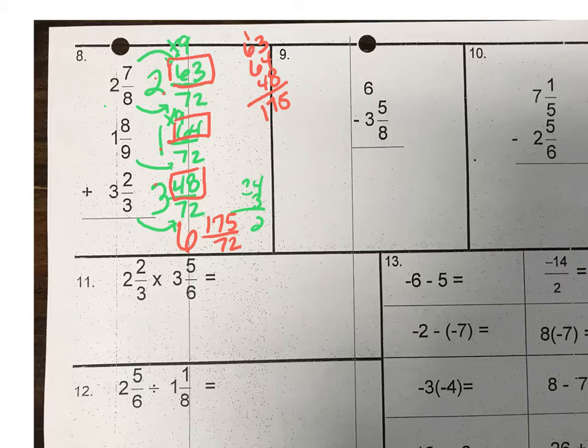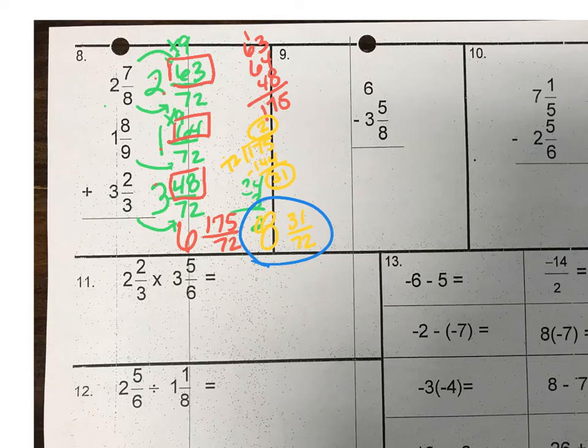Once we do that, we've got to simplify this fraction. It's improper, so we've got to move it to make it proper. So 175, 72 goes into 175, I think, just twice. So we'll make sure, but yep. So that's going to give me two holes to put over to the 6. So it makes it 8, and then 31 seventieths. So that's an ugly, that's probably the ugliest one we've had all year, but that's what it ends up.